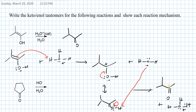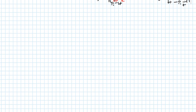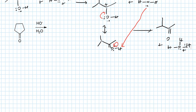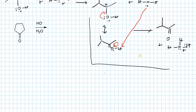This completes the first part. In the second step we are going to show the enol formation of this ketone. We have a ketone and basic conditions with water. Let's write the enol form first, then show the reaction mechanism. The keto-enol form will be drawn now.